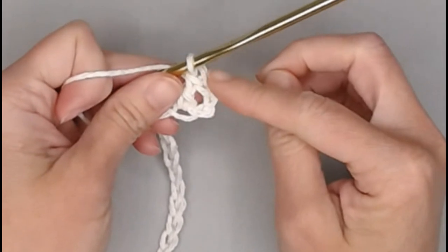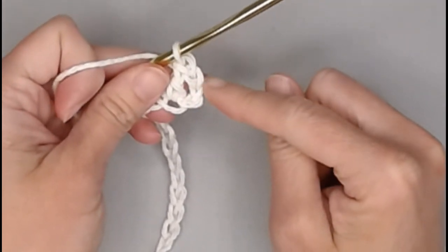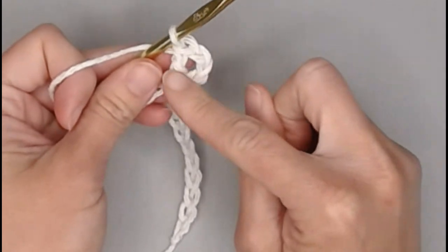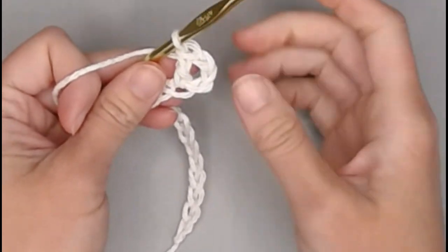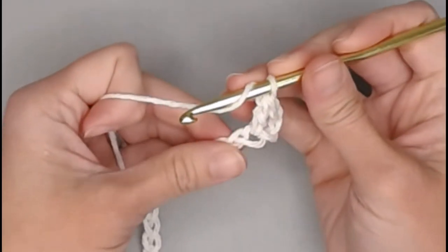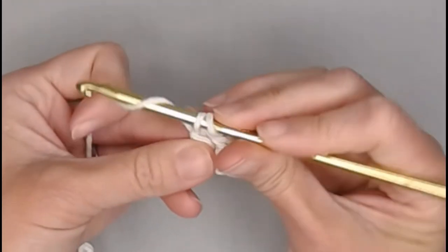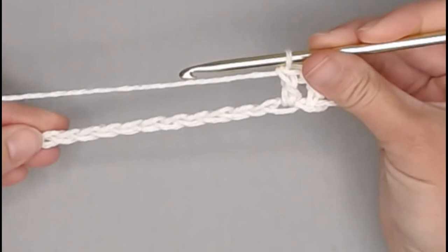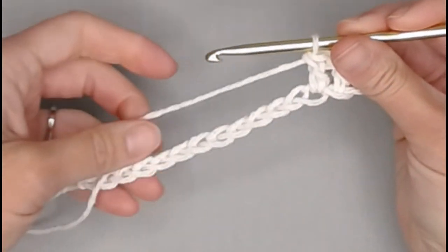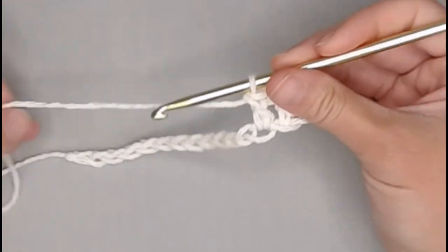The three chains that we just skipped do count as your first double crochet stitch. So technically we now have two double crochet stitches. You will continue making one double crochet stitch in each chain all the way across your row one. I will meet you at the very end of row one to show you how we move on to row two.